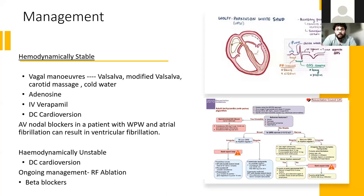The key contraindication for IV adenosine is asthma, because it can precipitate a severe acute attack. You need to be very careful in that context.